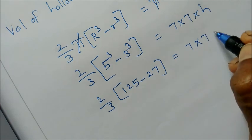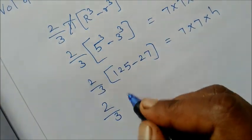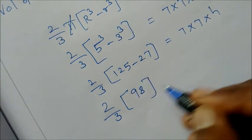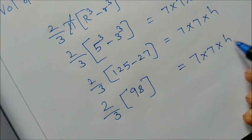2 by 3 into 5 cube is 125 minus 27. So 7 into 7 into h equals 2 by 3 into 125 minus 27 is 98.